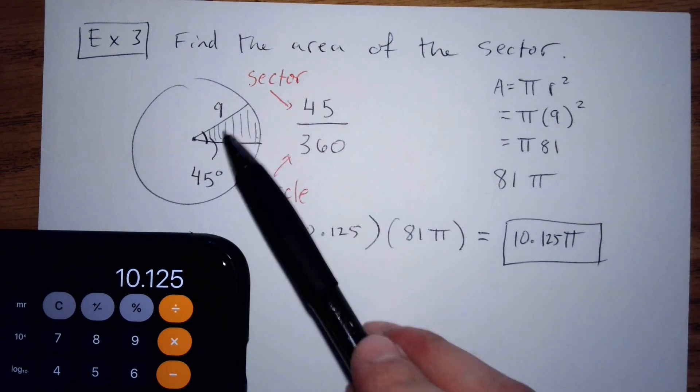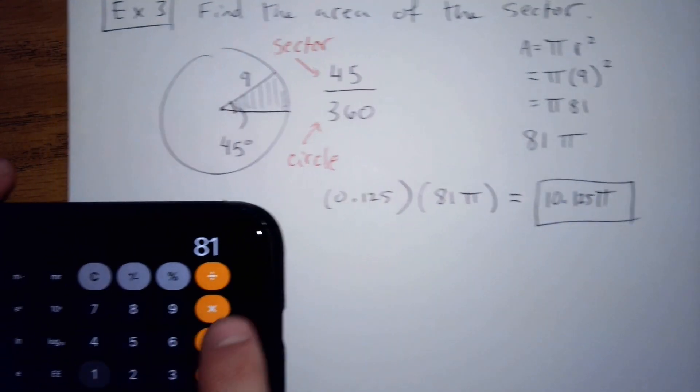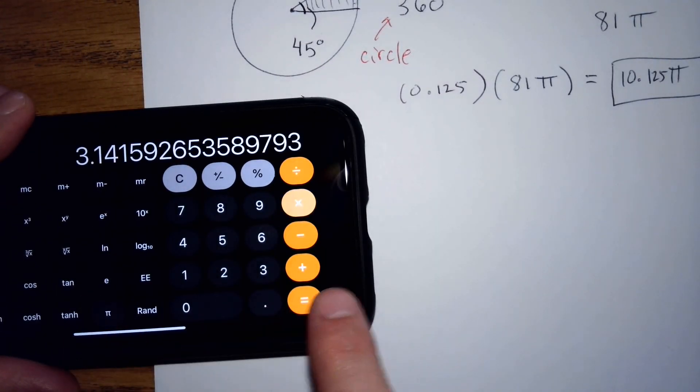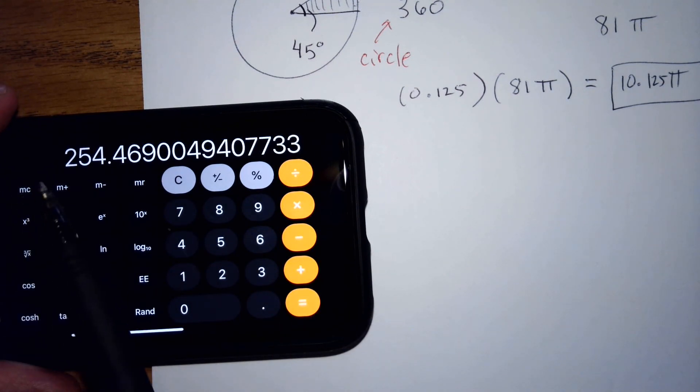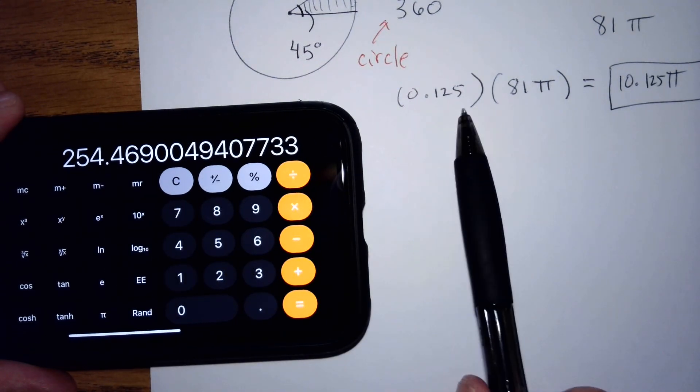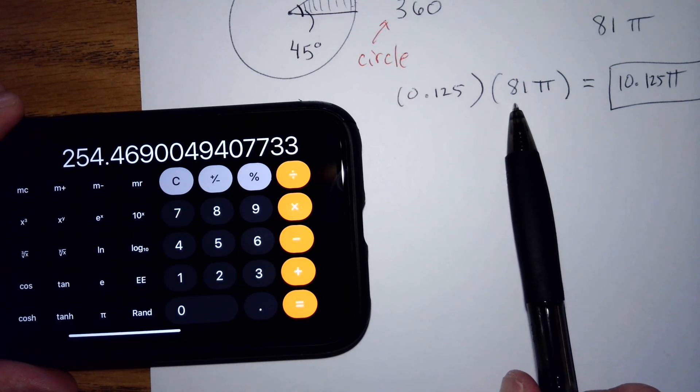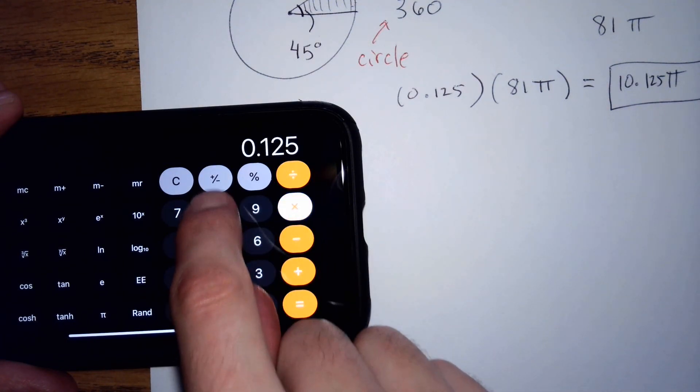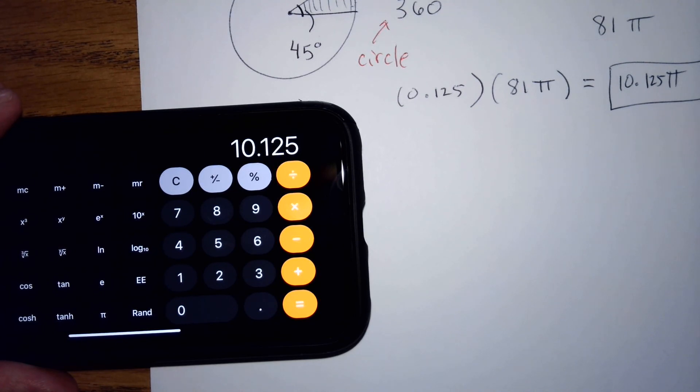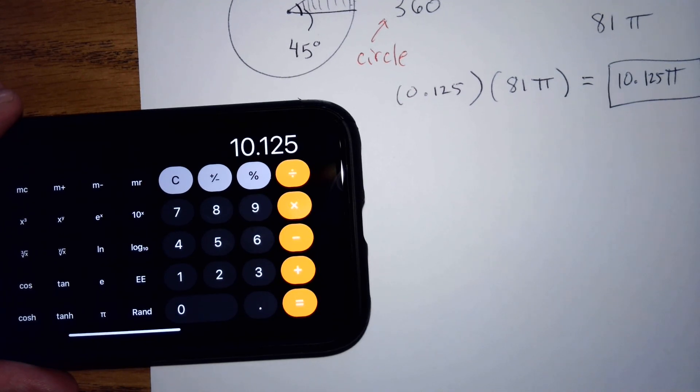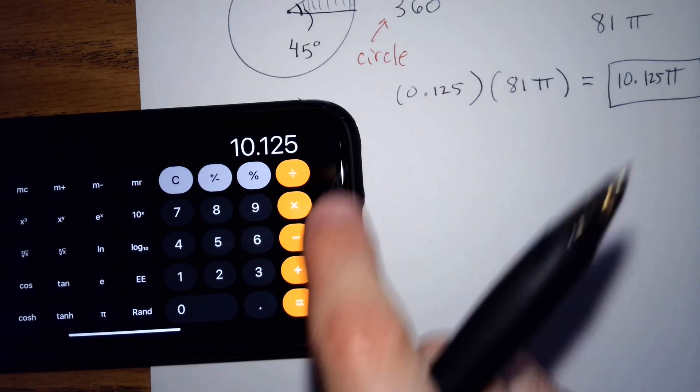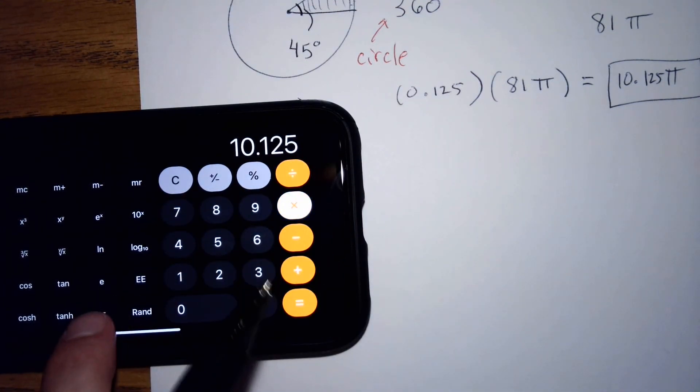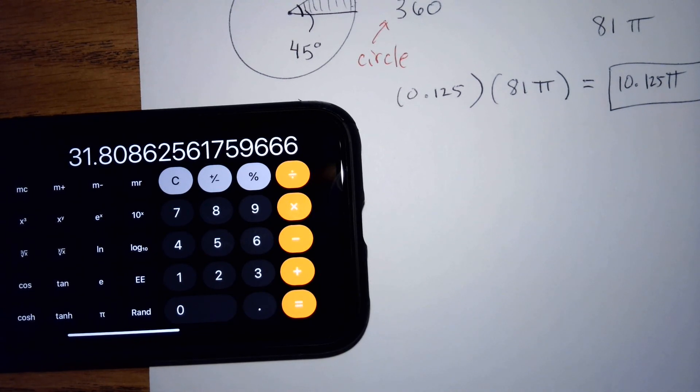If I really wanted to figure out the number for the area of the whole thing, I could do 81 times pi. Just 81, because I'm leaving the pi on here. If you want to figure that out, you can, but I'm just going to leave the pi so that it's a little bit cleaner. Because if we did 10.125 times pi, then we end up with 31 for the sector.